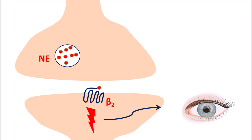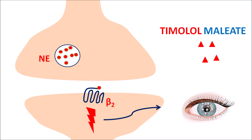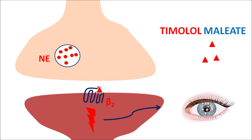These neurons supply the eye where they produce aqueous humor, which is responsible for lubrication of the eye. In patients with glaucoma, aqueous humor is overproduced or insufficiently cleared, resulting in increased intraocular pressure within the anterior chamber of the eye. Timolol maleate can block the beta-2 receptors on the adrenergic neurons, inhibiting post-synaptic activity and decreasing the formation of aqueous humor, thereby reducing intraocular pressure.